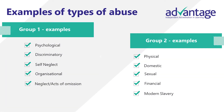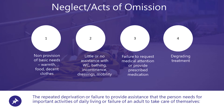Examples of abuse include psychological abuse, discrimination, financial abuse and neglect. Neglect or acts of omission can be defined as the repeated deprivation or failure to provide assistance that the person needs for important activities of daily living, or a failure of an adult to take care of themselves. This could mean not providing for basic needs such as warmth, food and decent clothes; little or no assistance with toileting, bathing, incontinence, dressings or mobility; or failure to request medical attention, provide prescribed medication, or degrading treatment.